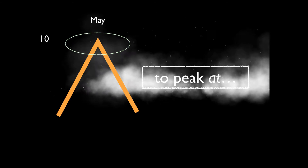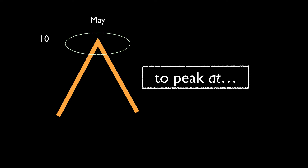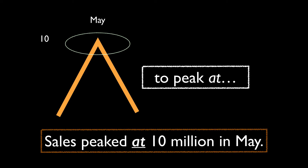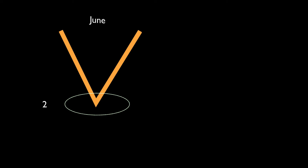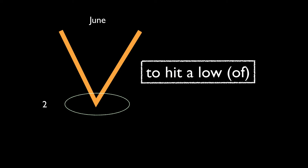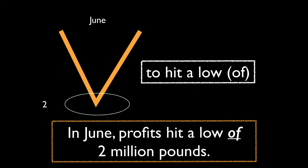To peak at: sales peaked at 10 million in May. To hit a low of: in June profits hit a low of two million pounds.